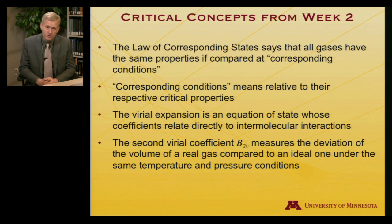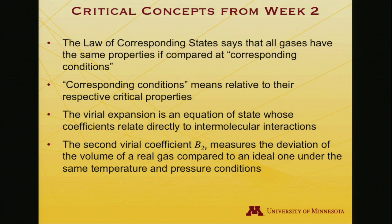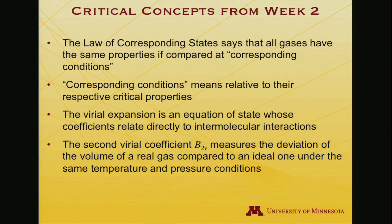We also saw another equation of state — the virial equation of state — and the virial expansion that appears in it has coefficients that are directly related to intermolecular interactions. The second virial coefficient, B2V, measures the deviation of the volume of a real gas compared to an ideal one under the same temperature and pressure conditions. If B2V is positive, that describes how much more volume the real gas occupies than an ideal one; when B2V is negative, the gas is occupying less volume than an ideal one at the same conditions.